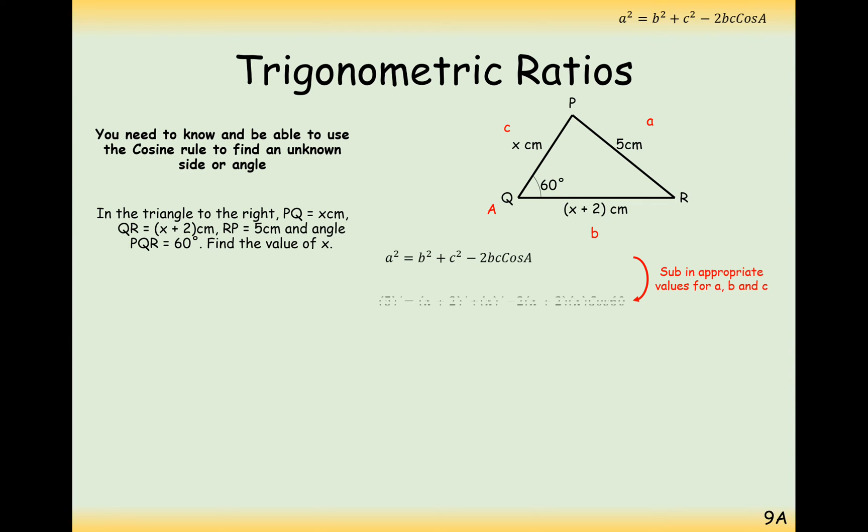So substituting these values into the formula and expanding using cos 60 is 0.5 we get x squared plus 4x plus 4 plus another x squared minus 2x squared plus 4x times 0.5 and simplifying all of this, subtracting the 25 onto the other side so we're able to solve it and we get x squared plus 2x minus 21 equals 0.